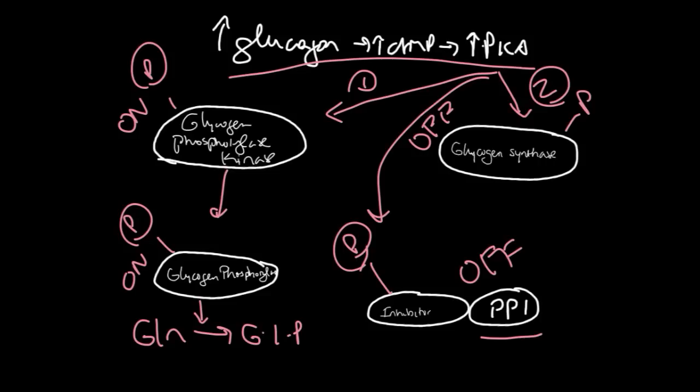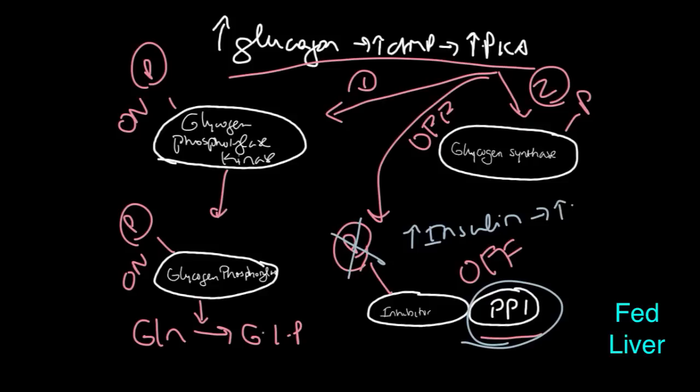Now if we switch over to the fed response, when insulin is high, insulin really works by activating this phosphatase. So insulin will cleave the phosphate off of the inhibitor. Insulin is going to increase protein phosphatase 2. That protein phosphatase 2 cleaves this phosphate. Now, protein phosphatase is on.